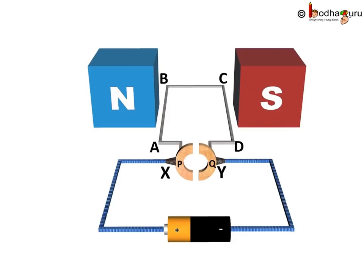And now we also know the model of a simple electric motor. So here we see a simple rectangular coil ABCD which is made of insulated copper wire and the coil is placed between the two poles of a horseshoe magnet. The placement is such that the arms AB and CD of the coil are perpendicular to the direction of the magnetic field.